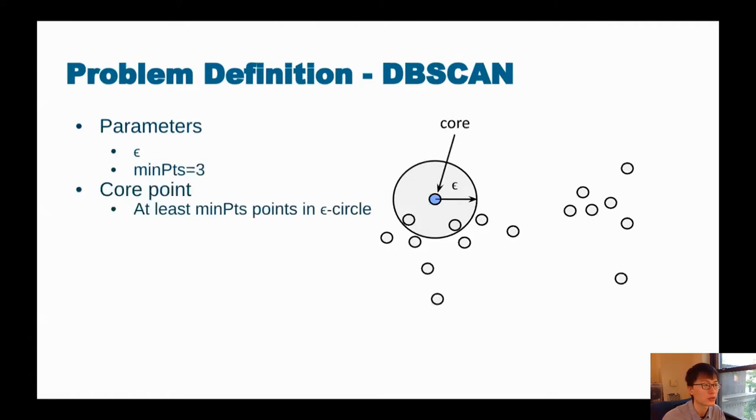Let's set minPts equals 3 and define core points. Core points are the points with at least minPts number of points in the epsilon circle. In the example, the point highlighted in blue has three points in the epsilon circle, so it qualifies as a core point.